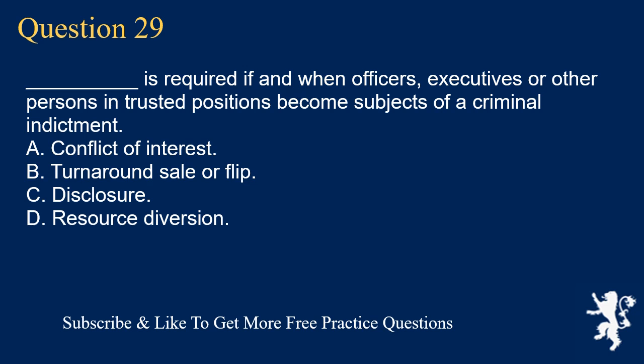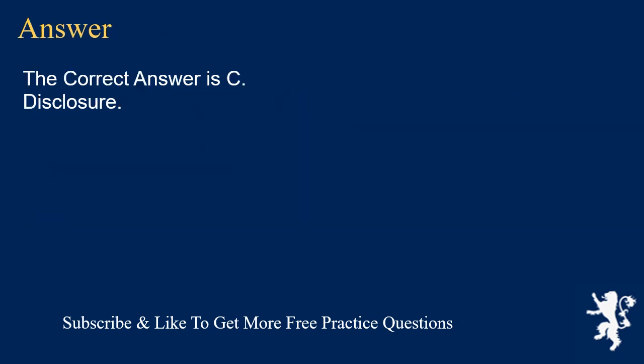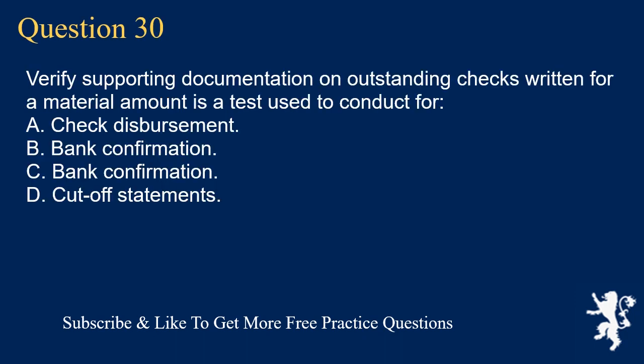Question 29: Underscore is required if and when officers, executives, or other persons in trusted positions become subjects of a criminal indictment. A. Conflict of interest. B. Turnaround sale or flip. C. Disclosure. D. Resource diversion. The correct answer is C. Disclosure.